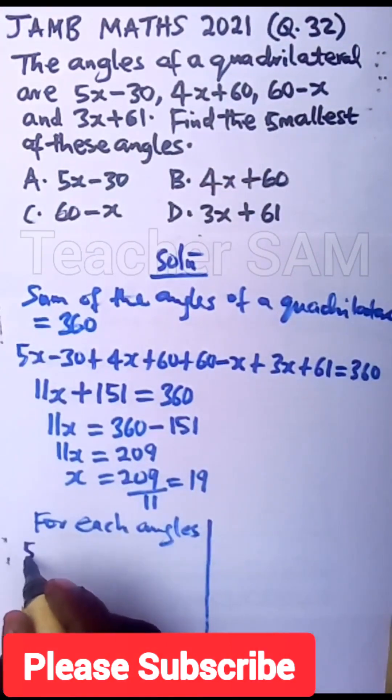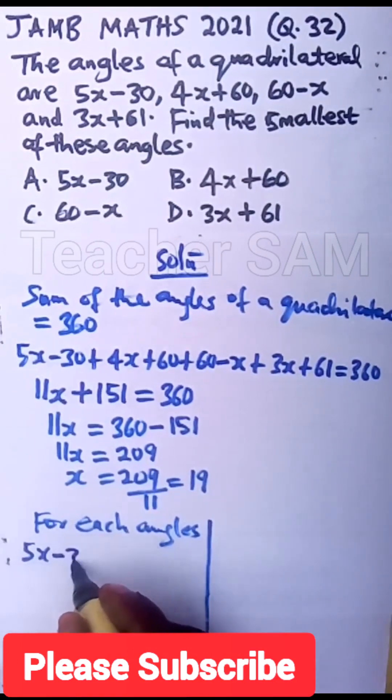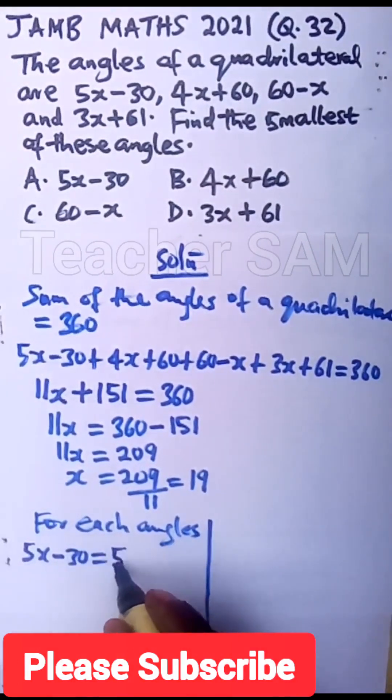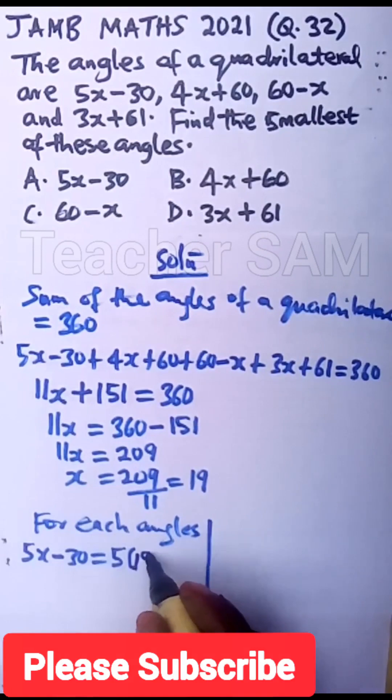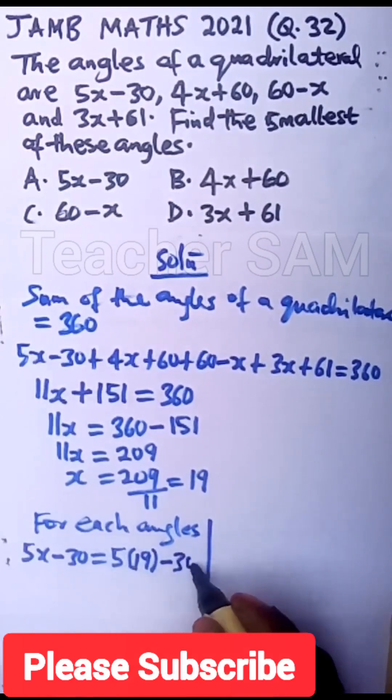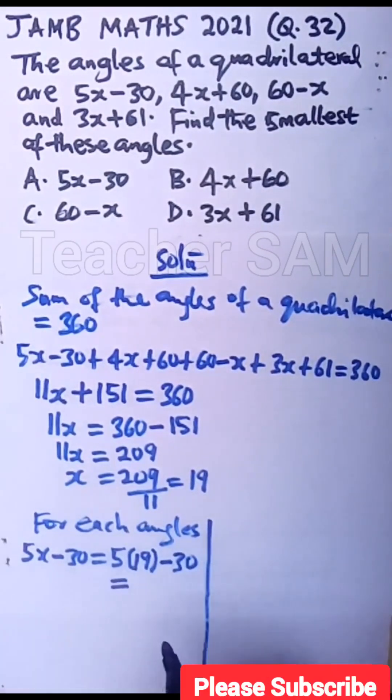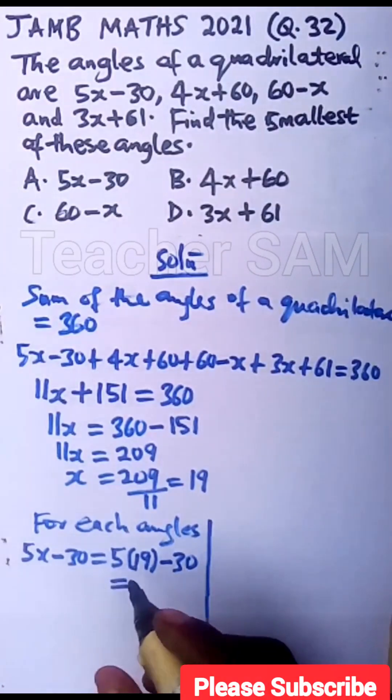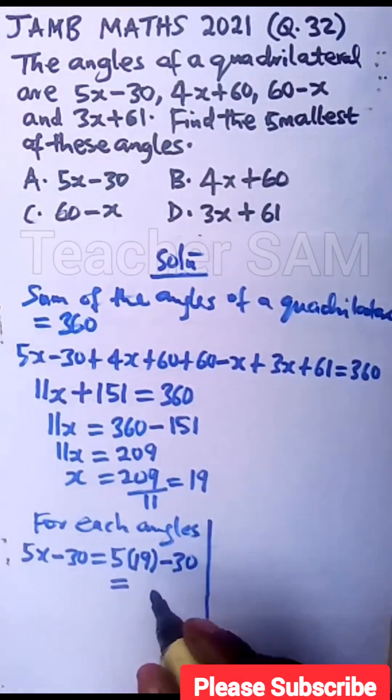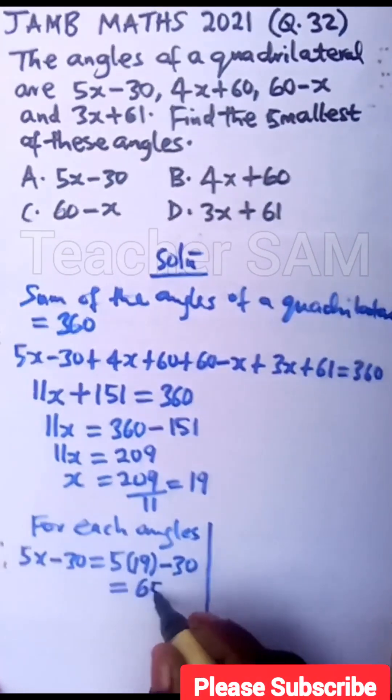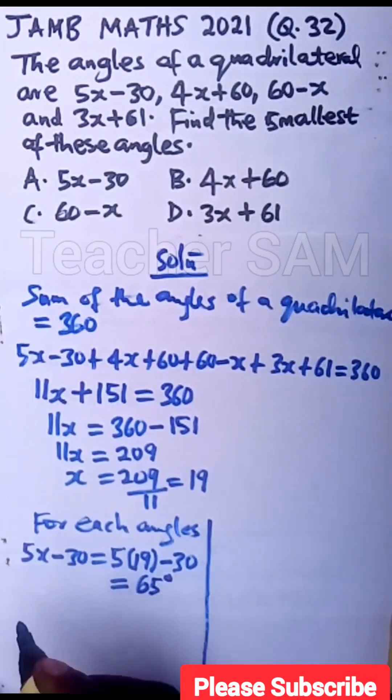that will be, that is 5x minus 30. Let's substitute that. That will be 5 into 19 minus 30. If you do that correctly, 5 times 19 minus 30 will give you 65 degrees. That is the first angle there.